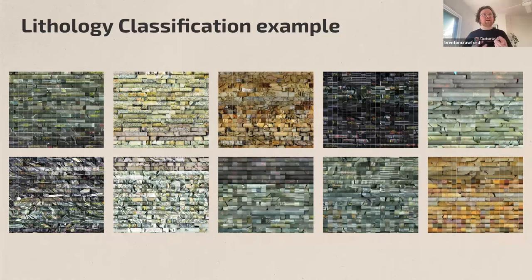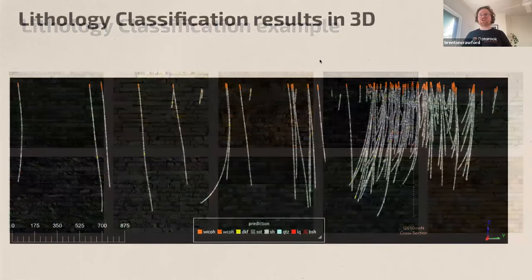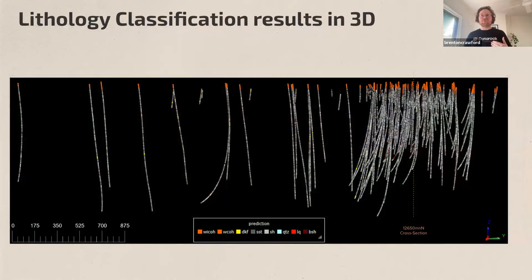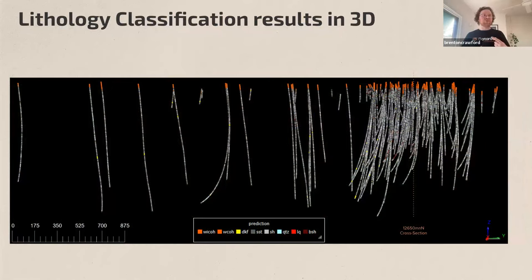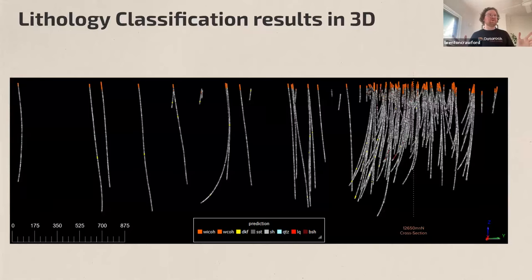That said, there are limits: if input variation from two different photography systems overlaps with the variation between geological classes, the model will struggle. Looking at the lithology prediction across a cross-section through Fosterville: weathered orange units at the top, yellow dykes cross-cutting, various shades of gray for interbedded siltstones and sandstones, laminated quartz veins in red, and black shales in maroon. It's very high-frequency and detailed — a large amount of core logged across the deposit in a short time, based purely on imagery with no chemistry included.